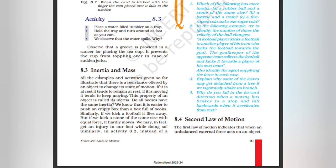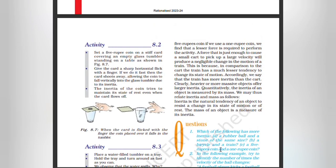Inertia and mass. All the examples and activities given so far illustrate that there is a resistance offered by an object to change its state of motion. If it is at rest it tends to remain at rest; if it is moving it tends to keep moving. This property of an object is called its inertia. Do all bodies have the same inertia? We know that it is easier to push an empty box than a box full of books. Similarly, if we kick a football it flies away, but if we kick a stone of the same size with equal force it hardly moves — we may in fact get an injury to our foot while doing so.